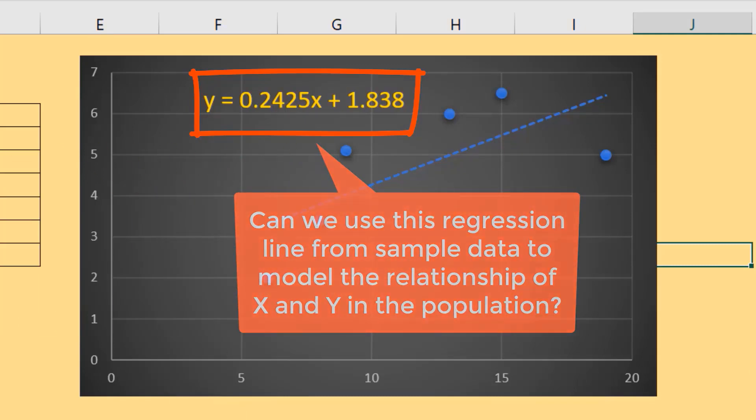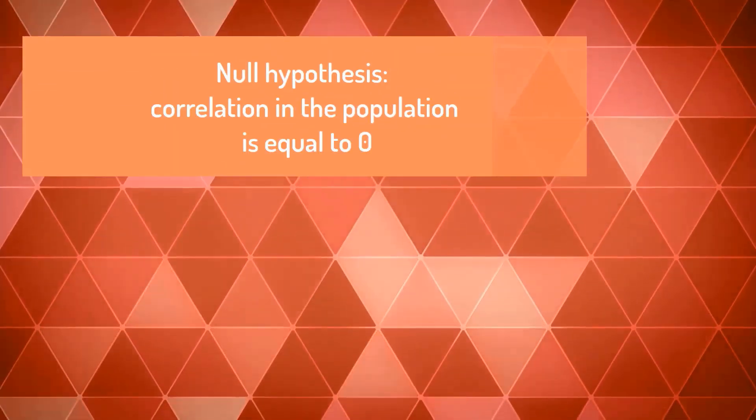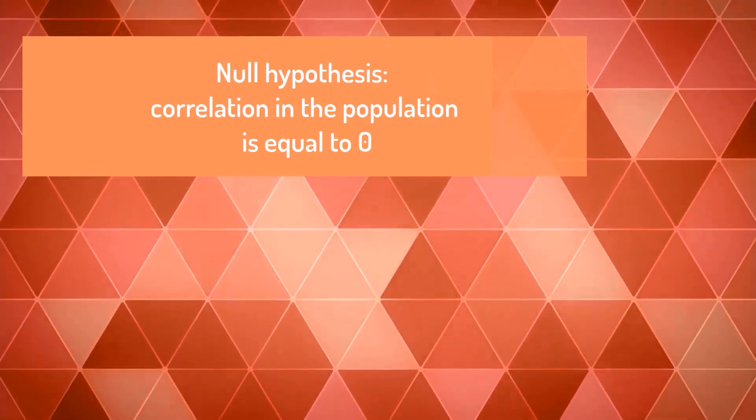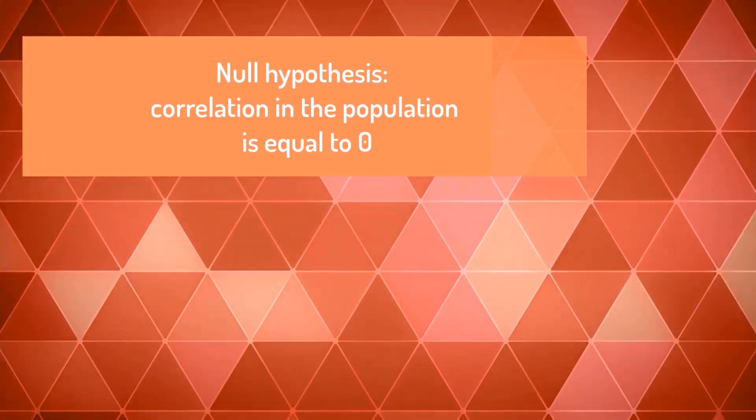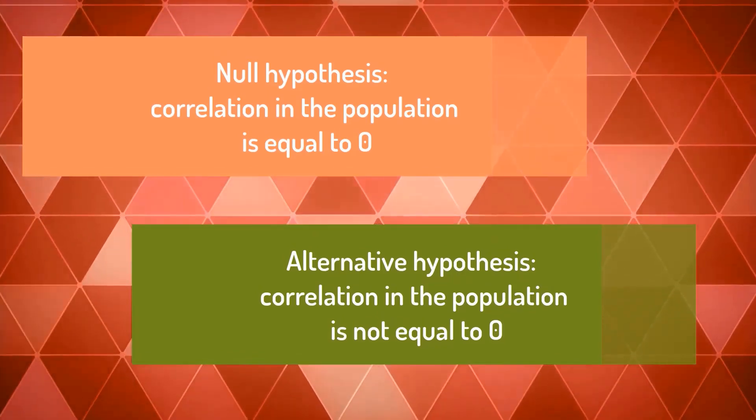Can we use this regression line from sample data to model the relationship of two variables in the population? Our null hypothesis is the correlation in the population is equal to zero, while our alternative hypothesis is the correlation in the population is not equal to zero.